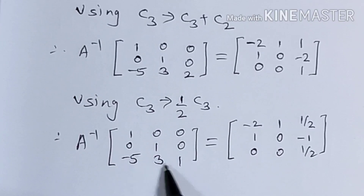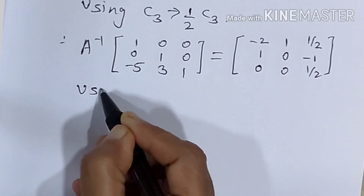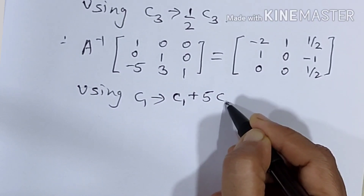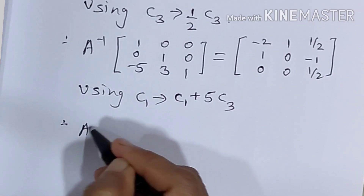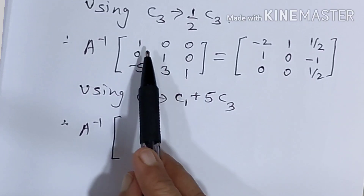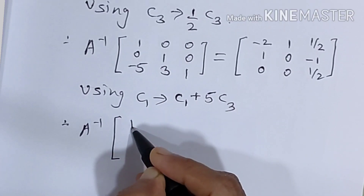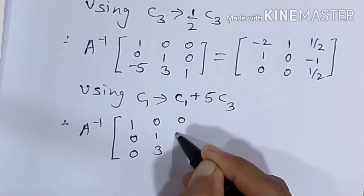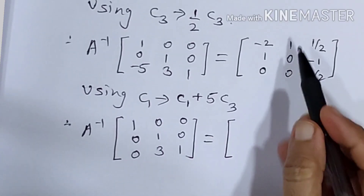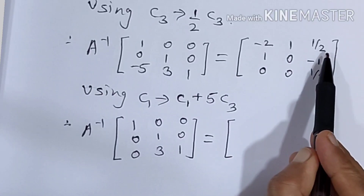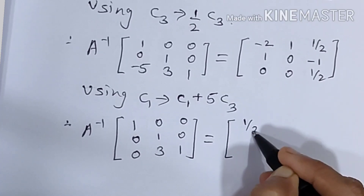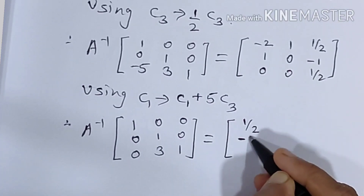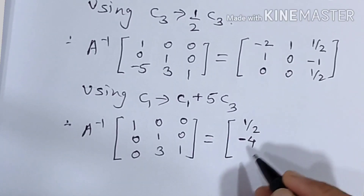Now we want 0 in two places. To get 0 in that position, the next operation is C1 changes to C1 plus 5 times C3. The first element remains as is, the second as is, and minus 5 plus 5 gives 0. The next two columns stay as is. On the right-hand side: minus 2 plus 5×(1/2) = minus 2 plus 5/2 = 1/2 here, then 1; and minus 5 plus 5×(something) gives minus 4, and 0 plus 5/2 = 5/2.